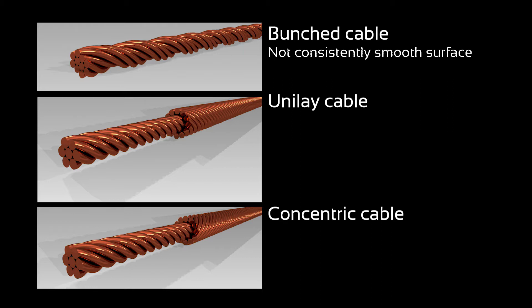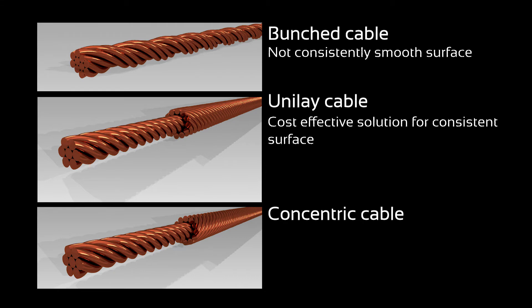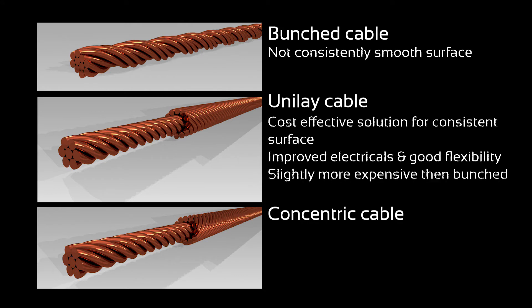This is the unilay and the concentric strand. In the unilay strand, everything is done in one operation, in the same lay length and lay direction. This is our cost-effective solution for a consistent surface. In this strand, we see improved electricals, good flexibility, and it is only slightly more expensive than the bunched.